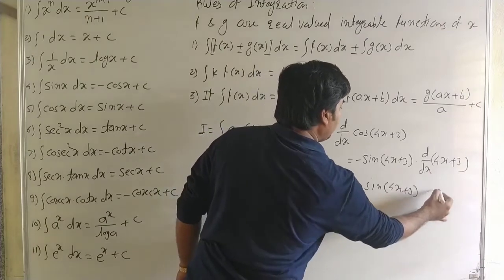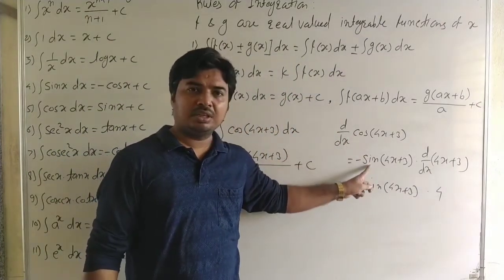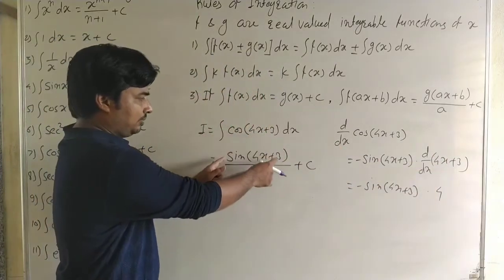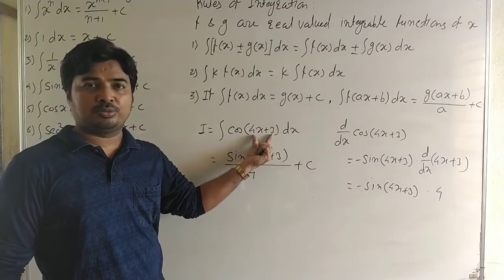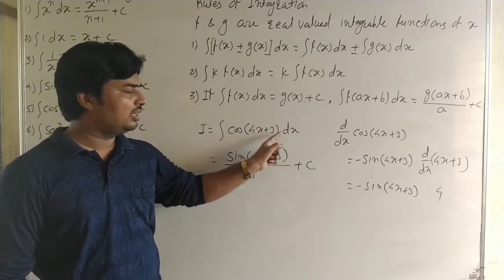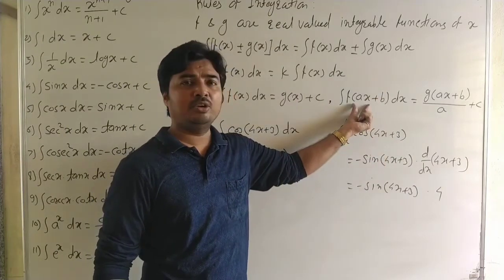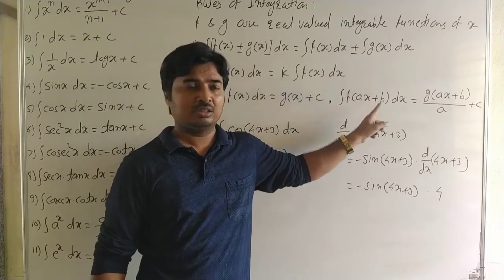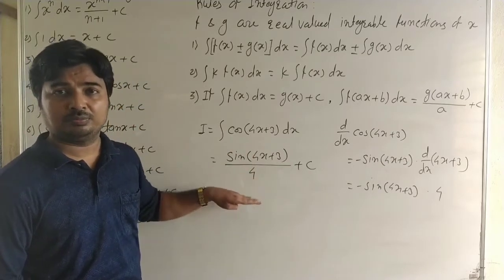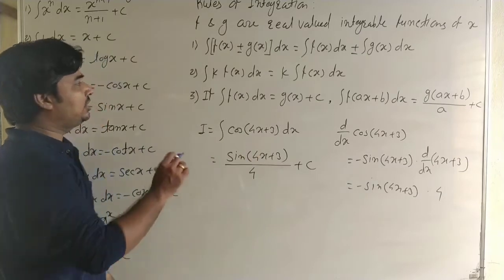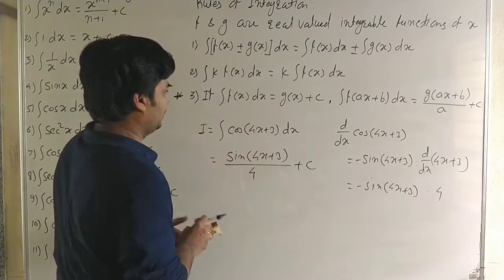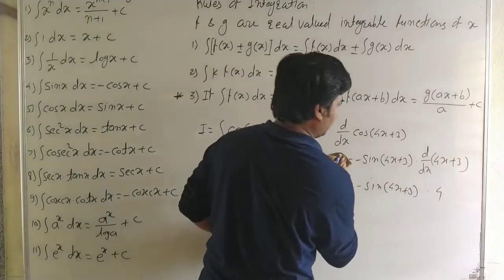In differentiation of a composite function, we write the derivative in multiplication. In integration, we write the direct integration and place the derivative of the inner function in the denominator. However, this rule is valid only when the composite function is in linear form, i.e., ax + b, where the inner function is linear in x.